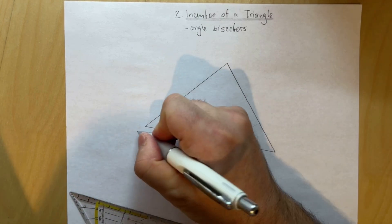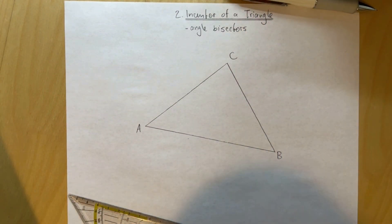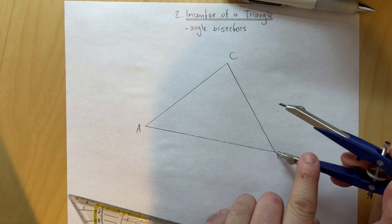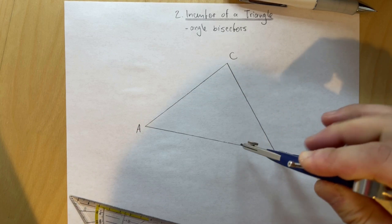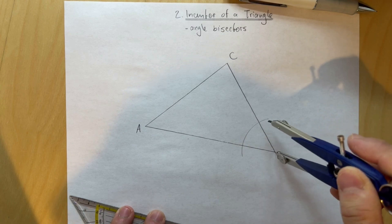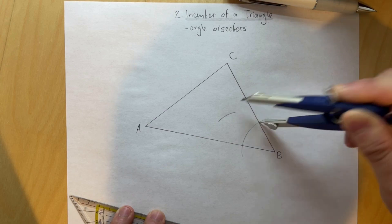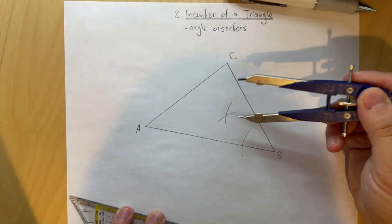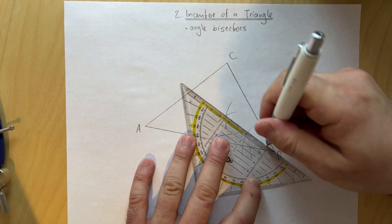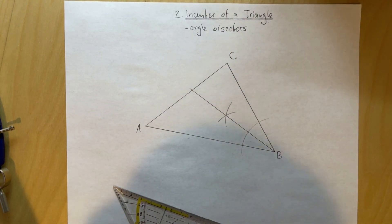We label the triangle as A, B, and C, and now we select two vertices to draw the angle bisectors. Starting at B, we draw an arc, then from the points of intersection we draw two more arcs such that they intersect at a point. We connect vertex B with that point and extend the line, giving us an angle bisector.